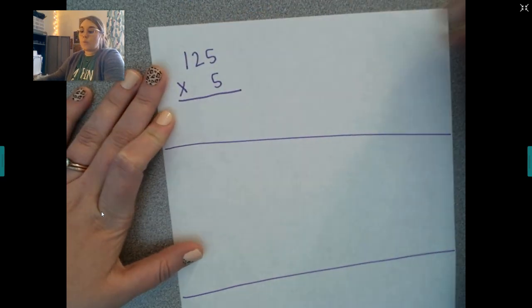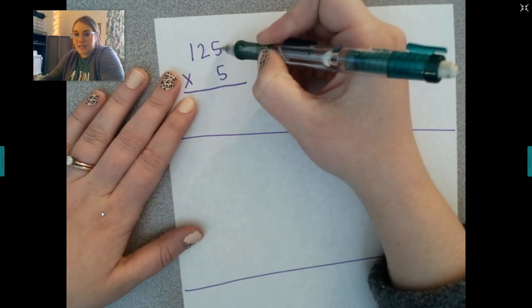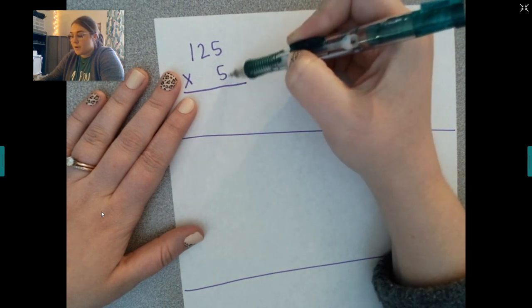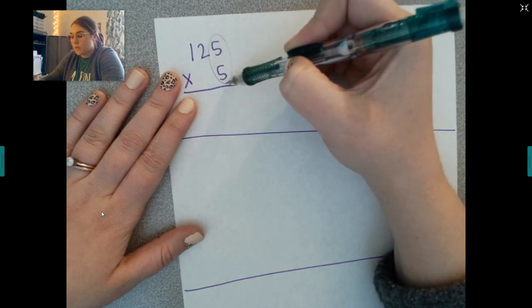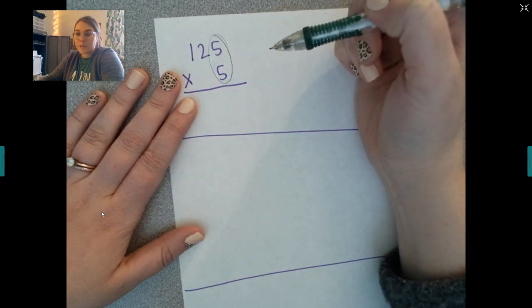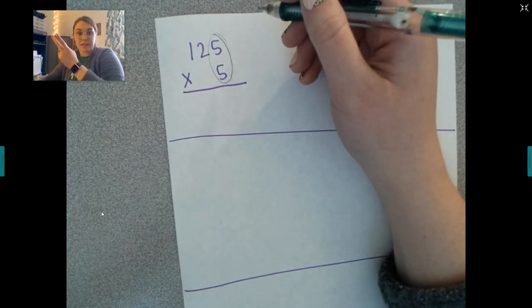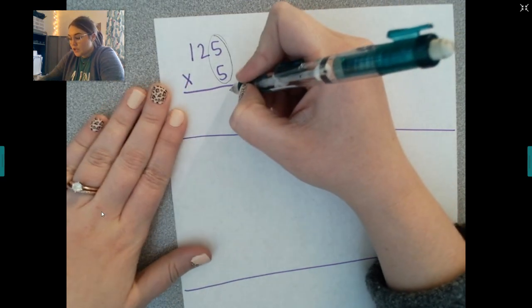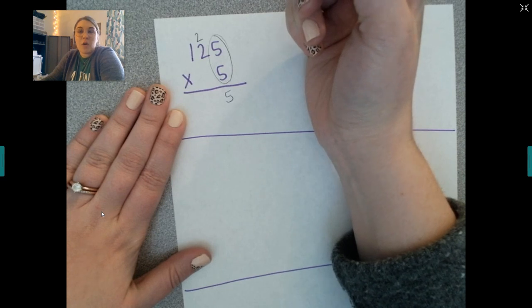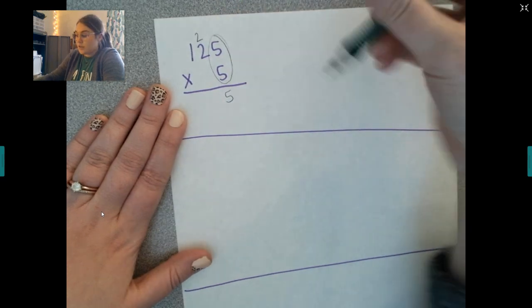So when I am doing multiplication, I multiply from right to left and it's really important that you remember that. So you take this number, this factor and you multiply it by your ones place. So what's five times five? If you don't know, you can get out that multiplication chart and check or you can count by fives. Five, ten, fifteen, twenty, twenty-five, right? So you write down your ones place and you carry your tens place. Now that is just like when you're adding and subtracting.